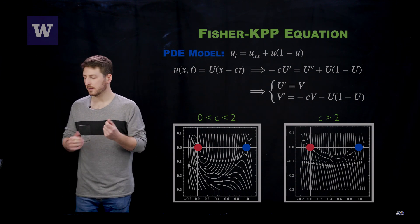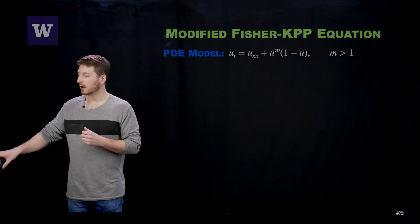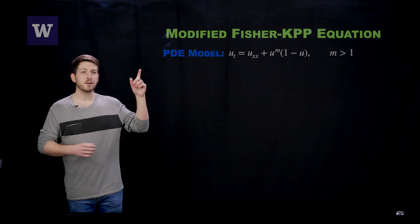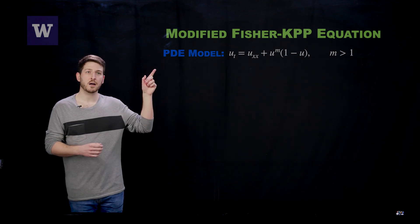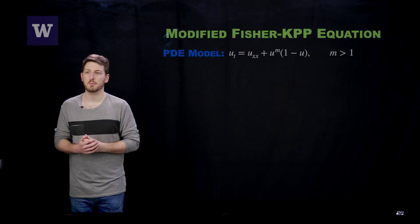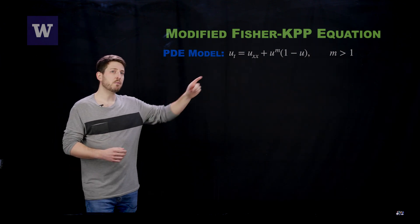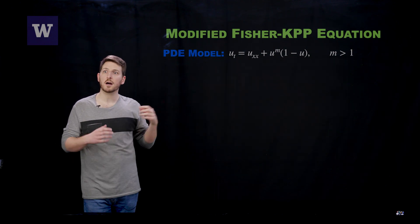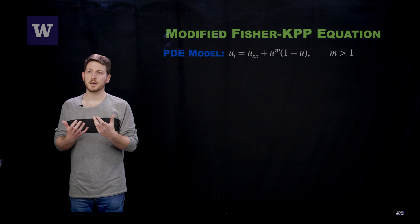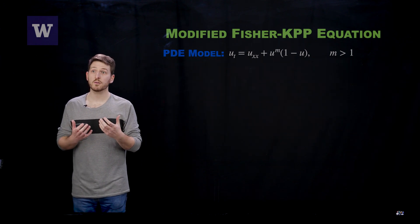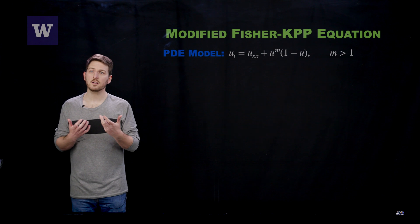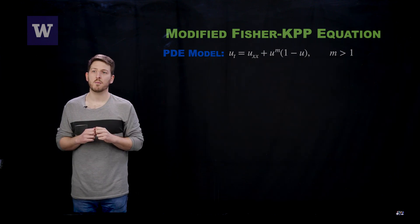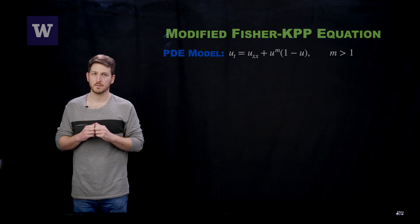Unfortunately, the analysis for many other monostable systems is not nearly as simple as the Fisher-KPP equation. In fact, we can very simply step up the complexity by looking at the so-called modified Fisher-KPP equation. You can see that the modification is coming through by an exponent m here, increasing the power of the nonlinearity. What this is representing in biological terms is what's referred to as a weak Allee effect. It's telling you that the biological population has trouble growing from very small population densities.